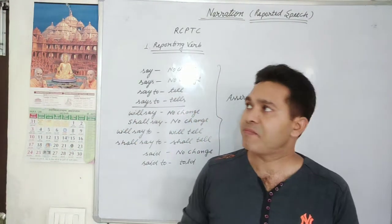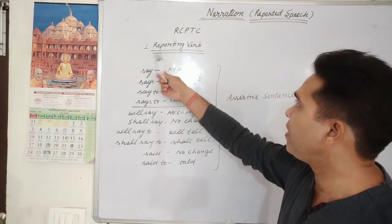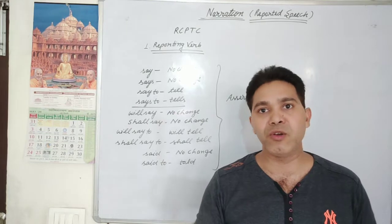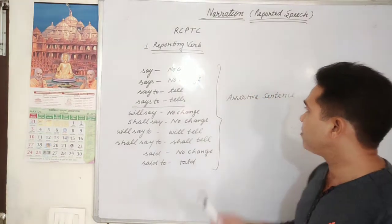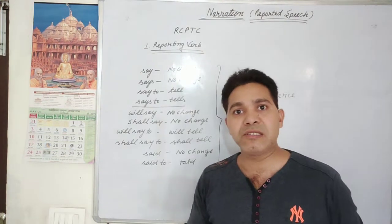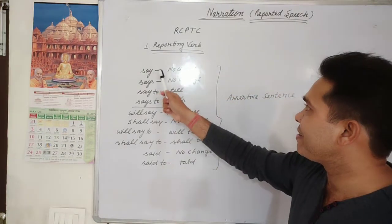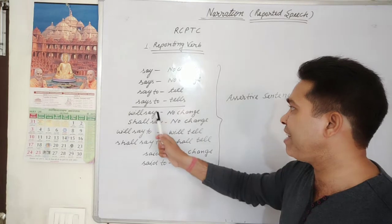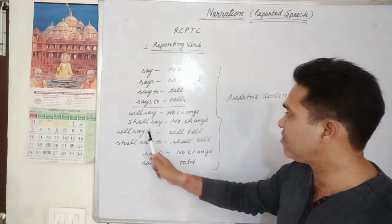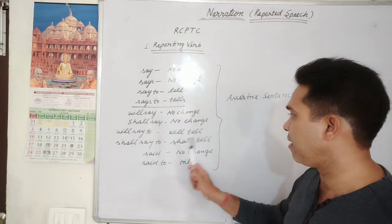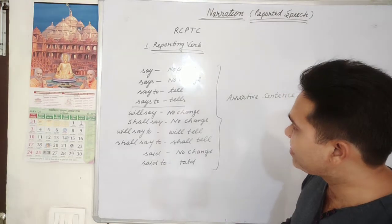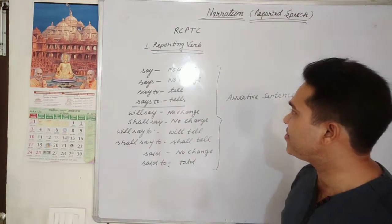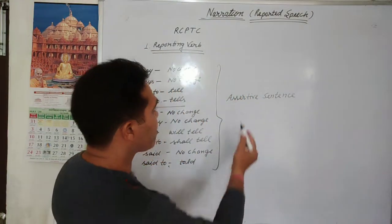R for reporting verb. Reporting verb is changed according to the type of sentence in reported speech, which is given in inverted commas. If the sentence is assertive — positive or negative — and the reporting verb is 'say', no change; 'says', no change; 'say to', changed to 'tell'; 'says to', changed to 'tells'; 'will say' or 'shall say', no change; 'will say to', changed to 'will tell'; 'shall say to', changed to 'shall tell'; 'said', no change; 'said to', changed to 'told'. So if 'to' is present, we change accordingly.